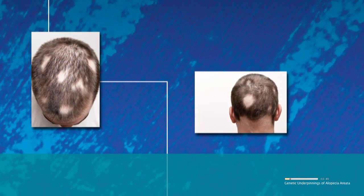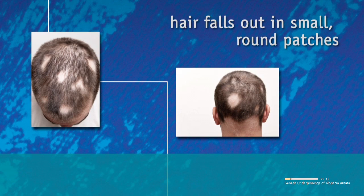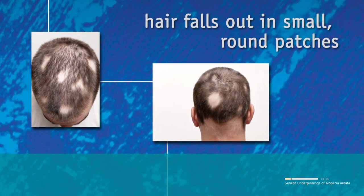In most cases, hair falls out in small, round patches about the size of a quarter. In many cases, the disease does not extend beyond a few bare patches.